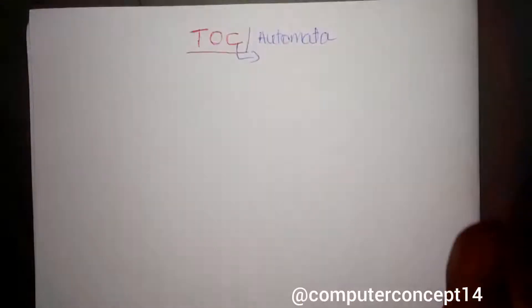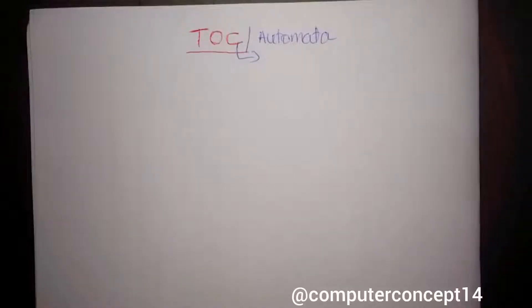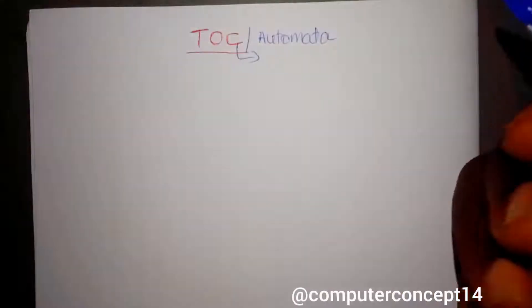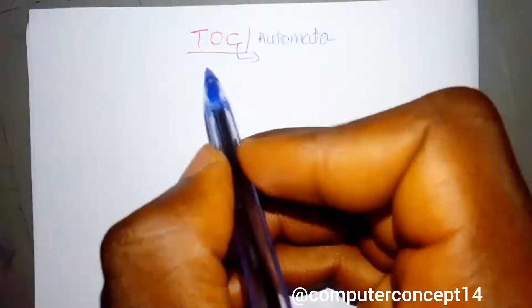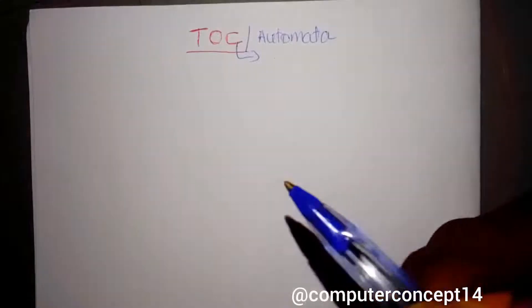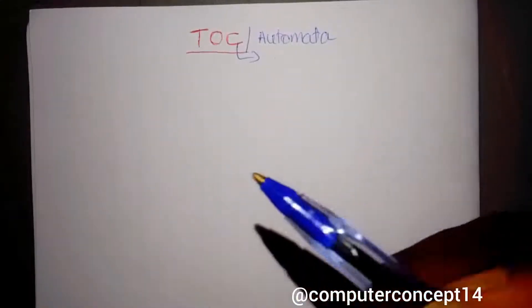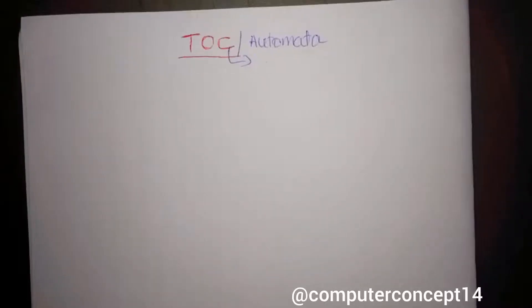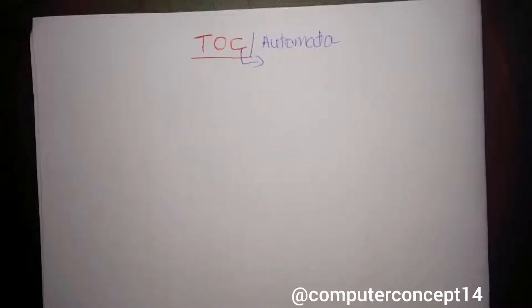Theory of computation — computation. So any task that is performed by a calculator or computer is computation. It is a mathematical model. The theory is that you have to understand the problem and the capability. It is a mathematical model for a computer. The theory of computation is a field of automata, and it is the basic model.